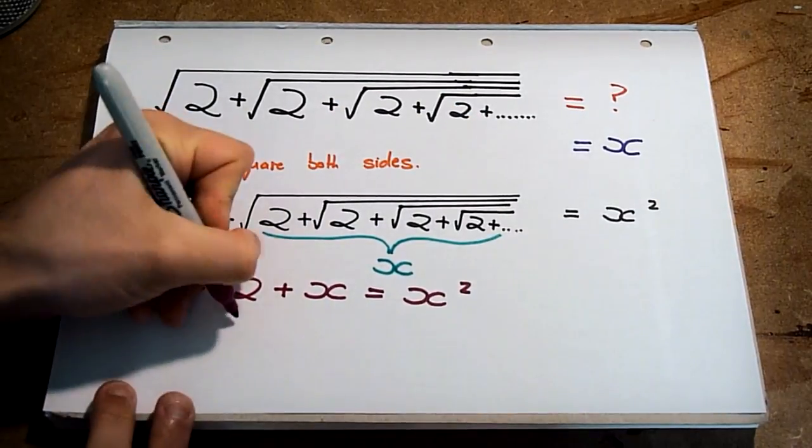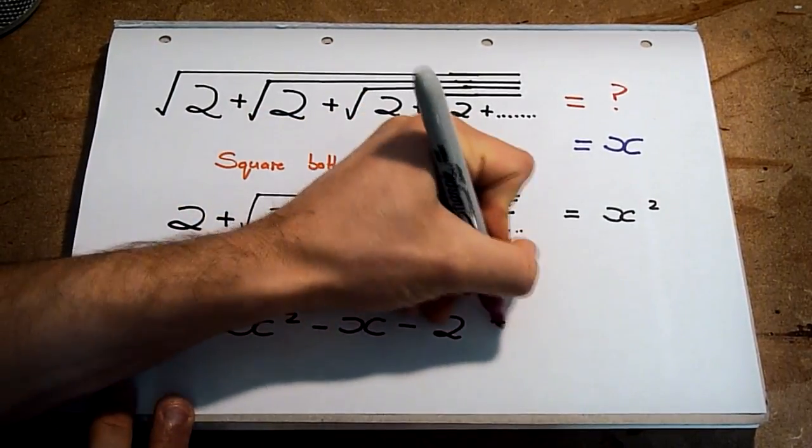Rearranging this, we get a quadratic equation, x squared minus x minus 2 equals 0.